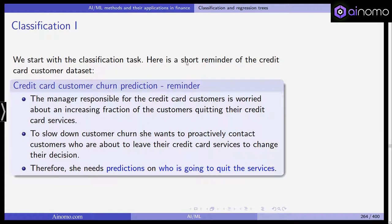It's a data sample with approximately 10,000 observations. As the manager, you're responsible for the customers and you are worried that an increasing number of customers quit your services. You want to slow down customer churn, so you want to proactively contact customers who are about to leave their credit card services to change their decision. Therefore, the manager needs predictions on who is going to quit the services.